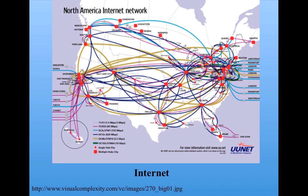Here's a network that we all rely on. This shows the North American Internet. Each one of these nodes is a particular set of servers and links are direct paths between the servers. You can see that there are certain hubs in this network. Again, if certain hubs are targeted or go down for some reason, the whole Internet can be largely disrupted.